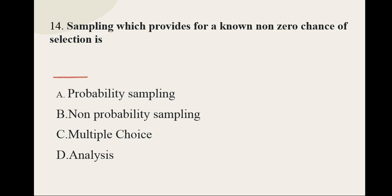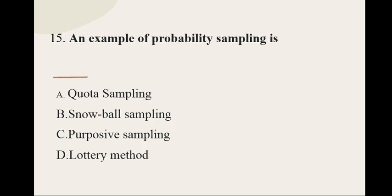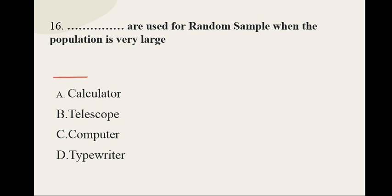Question number fourteen: Sampling which provides for a known non-zero chance of selection is — options are: probability sampling, non-probability sampling, multiple choice, analysis. The correct option for question number fourteen is probability sampling. Question number fifteen: An example of probability sampling is lottery method.